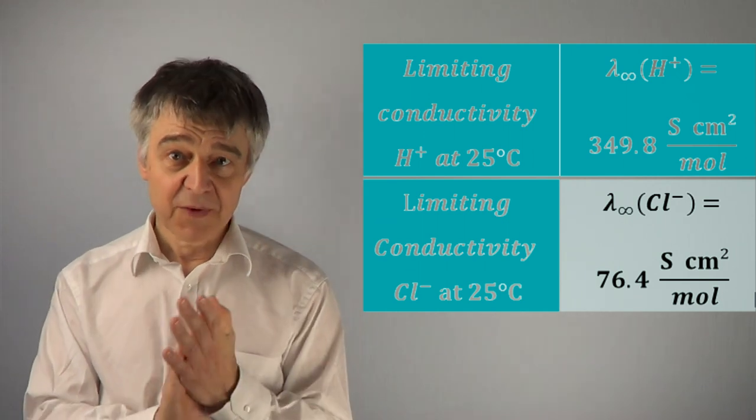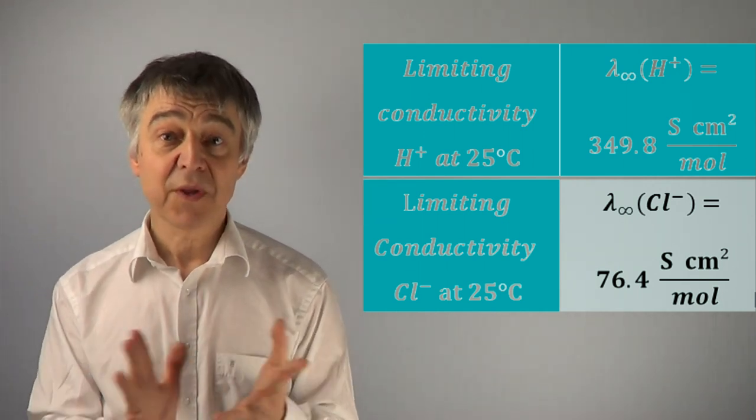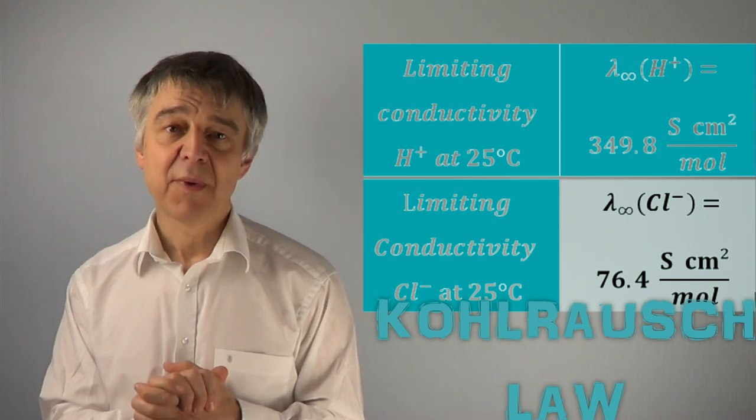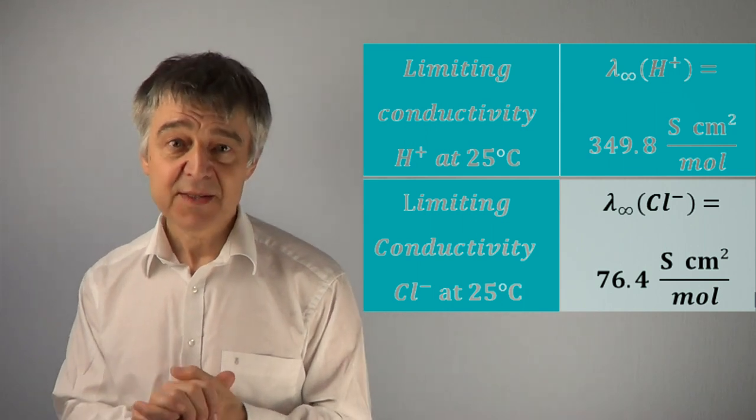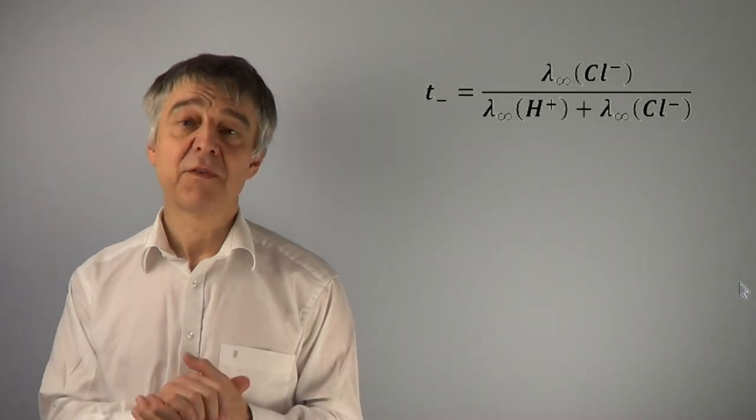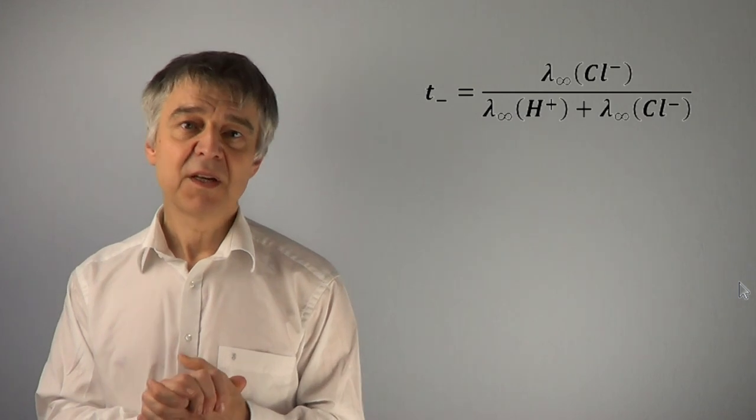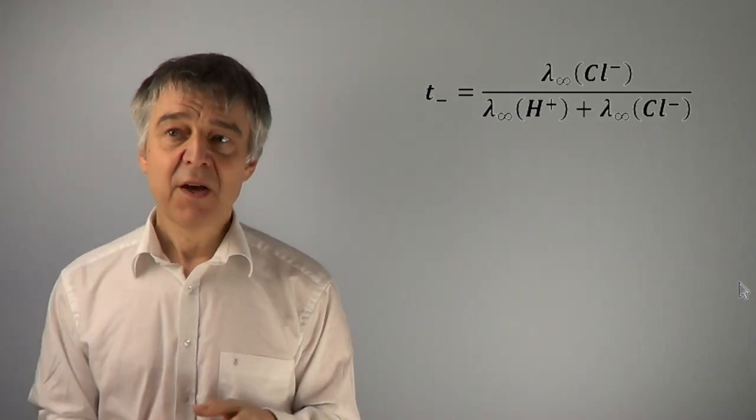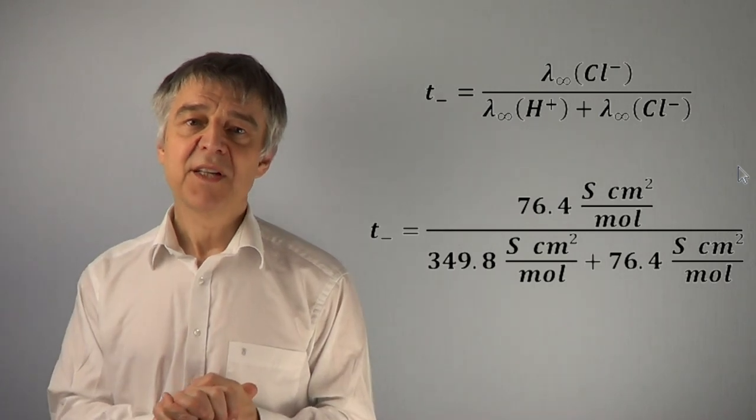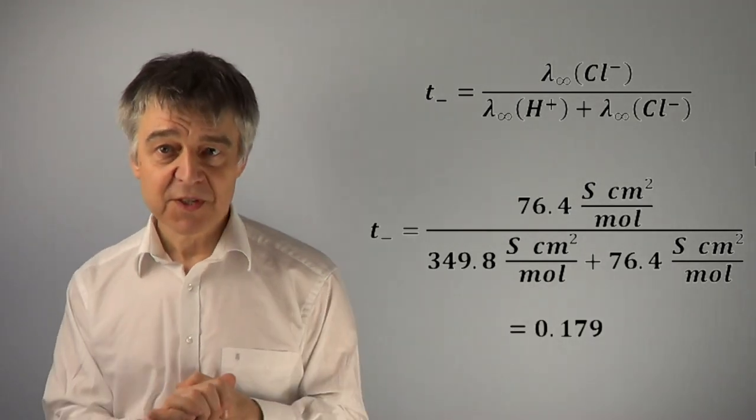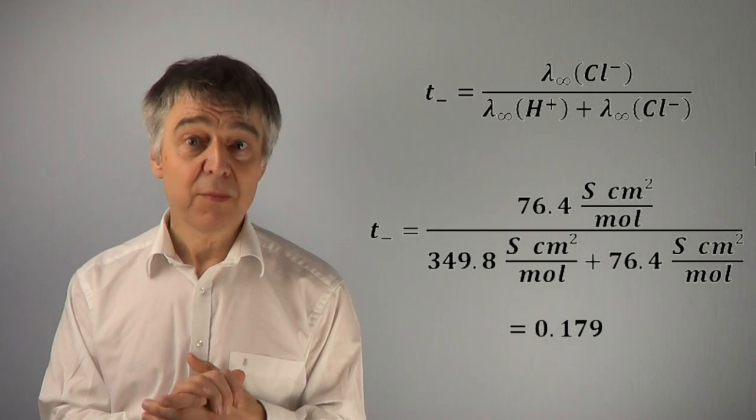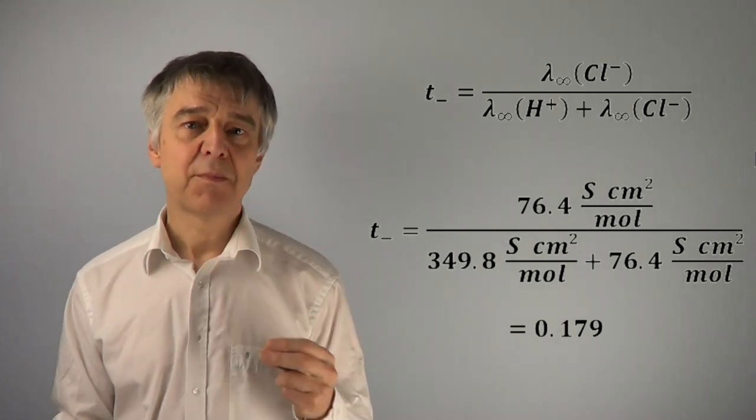The determination of the transport number can be done starting from the limiting equivalent conductivities of the ions, using Kohlrausch's law of independent migration of ions. Protons conduct much better than chloride ions. The ratio of the limiting equivalent conductivity of chloride ions and the limiting equivalent conductivity of the entire electrolyte results in T minus equals 0.179. About 18% of conductivity is carried by chloride ions and the remaining 82% by protons.